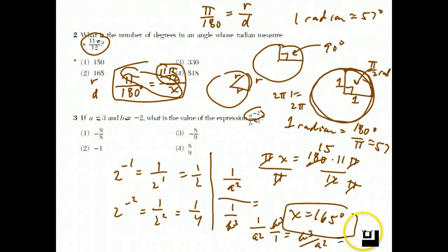b cubed, since b is negative 2, b cubed is negative 8, whereas a squared is 3. So, a squared is 9, which is why the answer to this question is negative 8 over 9.